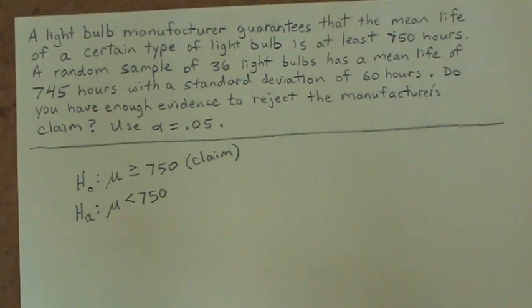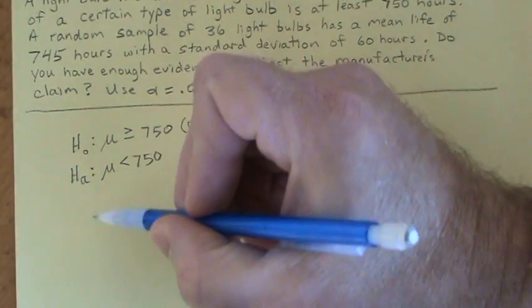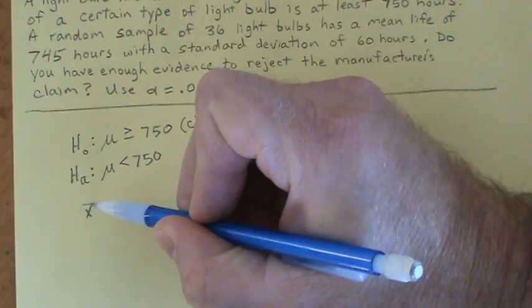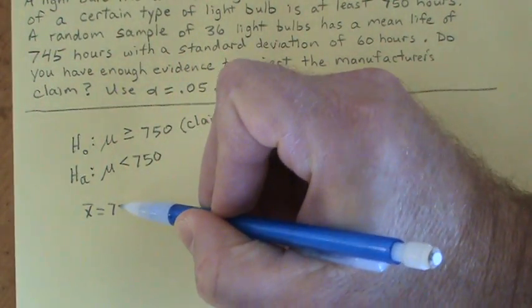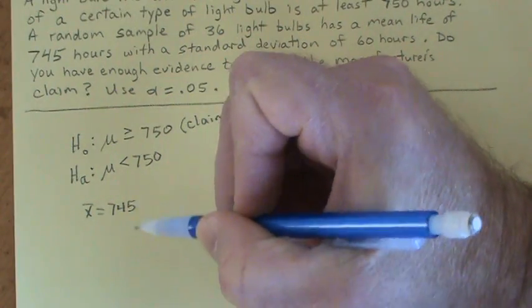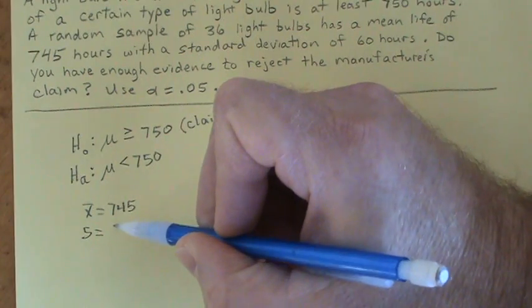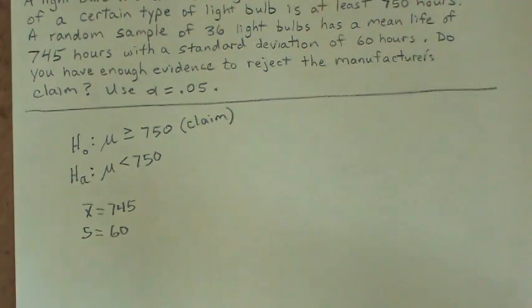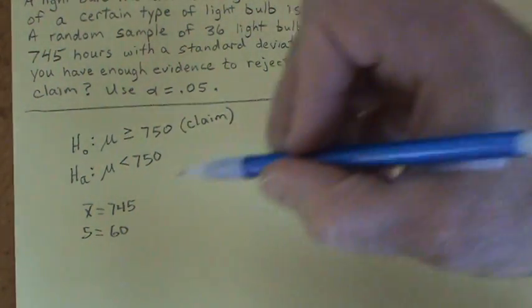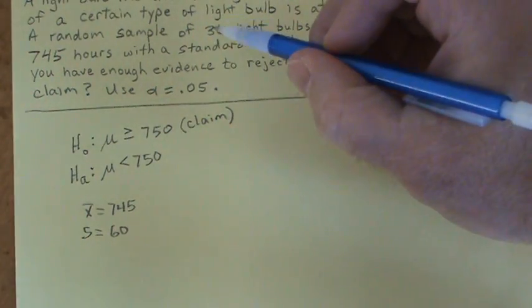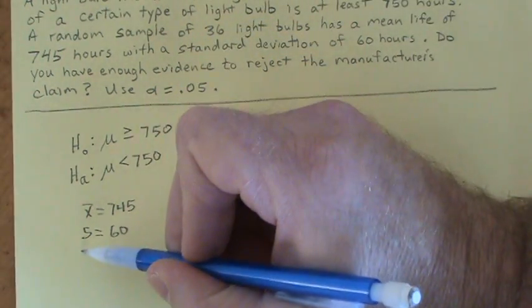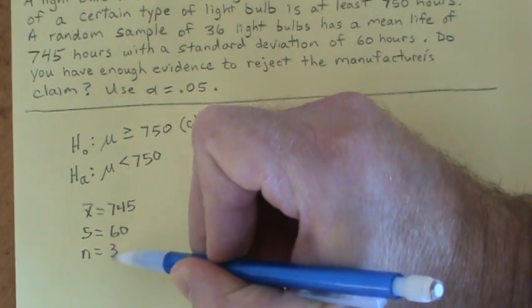Okay, from our sample, we see that the sample mean—and the symbol we use for sample mean is x̄—was 745 hours. And the sample standard deviation—we use little s for sample standard deviation—was 60 hours. And the sample size, the number of samples that we tested, were 36. So n, which is your sample size, is 36.